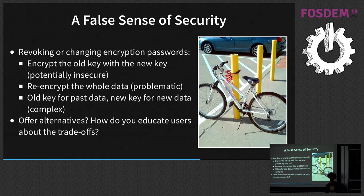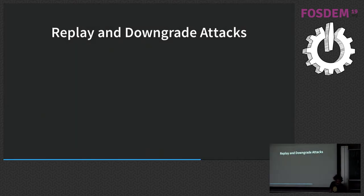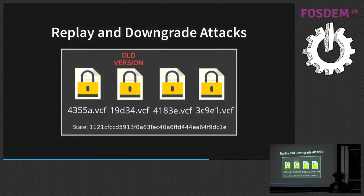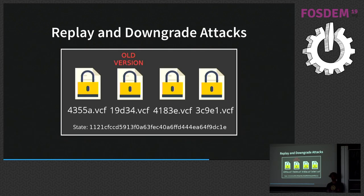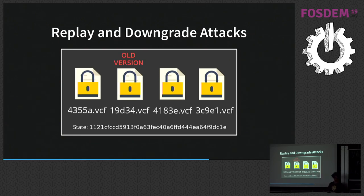You also need to be aware of replay and downgrade attacks — this is from my talk at Postum last year. Even though you encrypt everything and keep an integrity-checked version of all the data, the server can still serve you an old version. That old version was authenticated and signed by you, everything is valid, the signature checks out — but it's a stale version, possibly missing a calendar event. Just watch out for that.